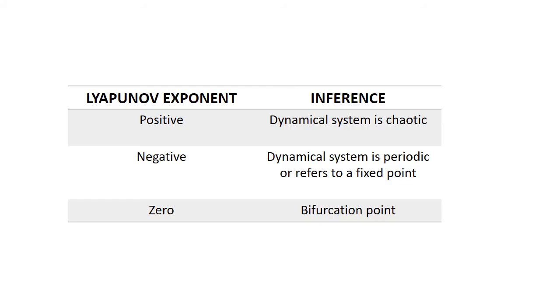What do we infer from the value of the Lyapunov exponent λ about the dynamical system? If the value is positive, then the dynamical system is chaotic.